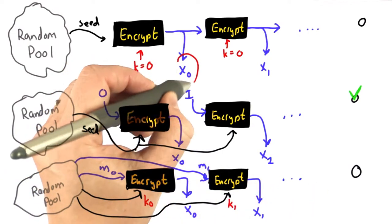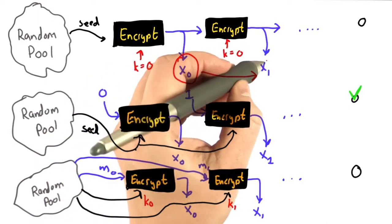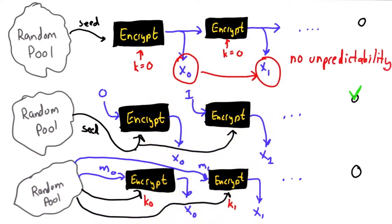If an attacker knows x0, they can easily compute x1, and that's a property our pseudo random number generator needs to have.